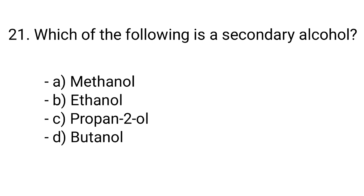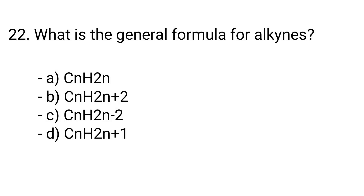Question number 21. Which of the following is a secondary alcohol? Option A: Methanol, B: Ethanol, C: Propan-1,2-diol, D: Butanol. The correct answer is option C, Propan-1,2-diol. Question number 22. What is the general formula for alkynes? Option A: CnH2n, B: CnH2n+2, C: CnH2n-2, D: CnH2n+1. The correct answer is option C, CnH2n-2.